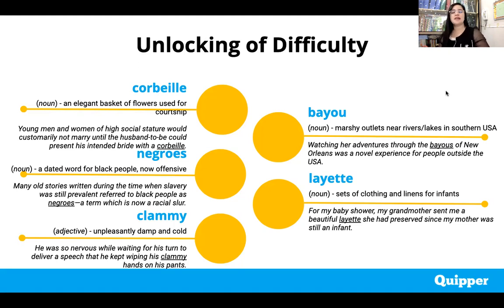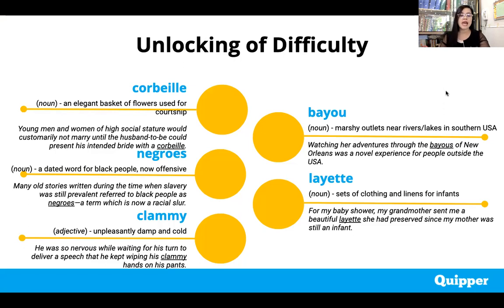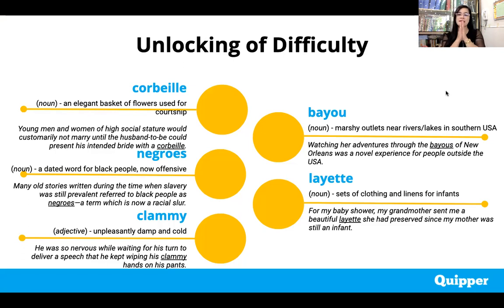Next word: 'clammy' — unpleasantly damp and cold. Example: he was so nervous while waiting for his turn to deliver his speech that he kept wiping his clammy hands on his pants. Whenever you feel nervous or anxious — like when you're going to speak in front of a lot of people — sometimes we have clammy hands, which is an indication that you are nervous or anxious.